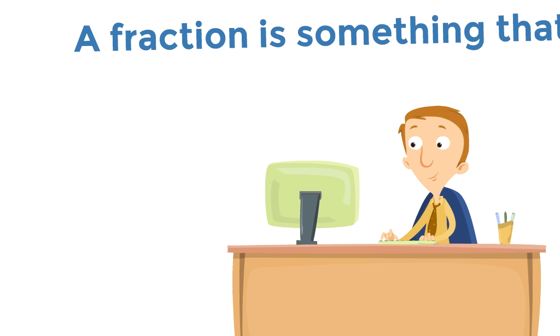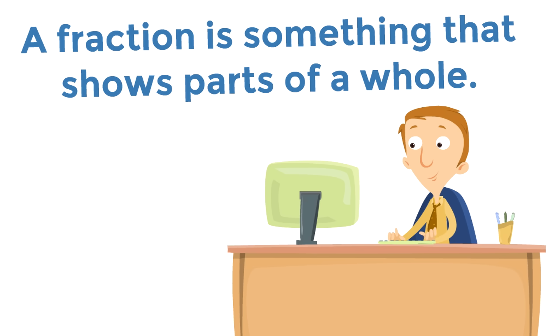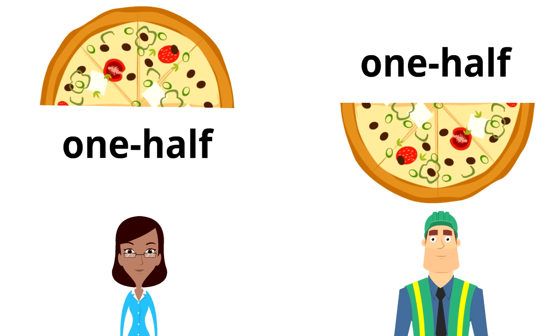Now remember a fraction is something that shows parts of a whole. So here is what the fraction looks like. A one, a line, and a two. That is the fraction one half. Each of them, Cindy and Chomsky, get one half of the pizza.